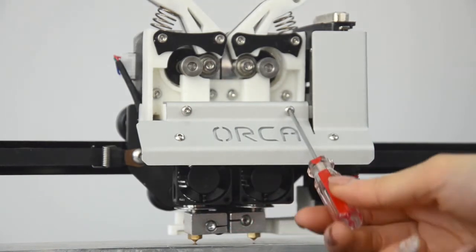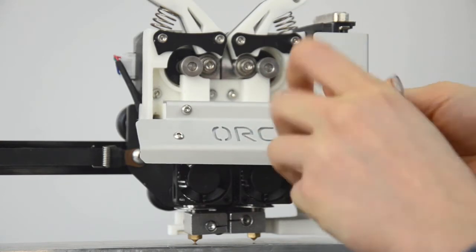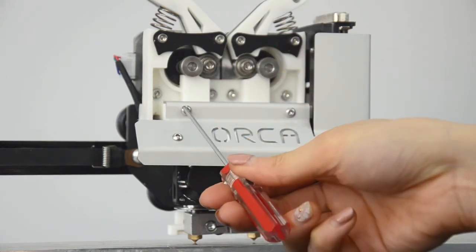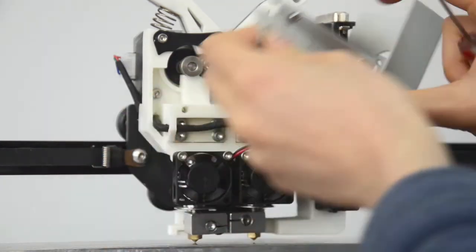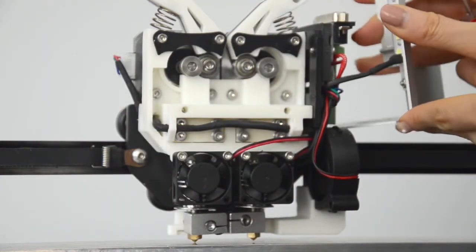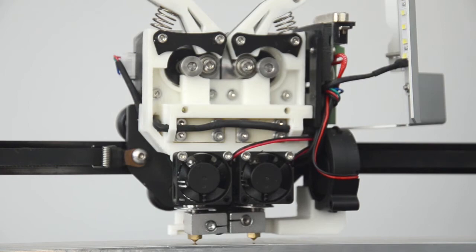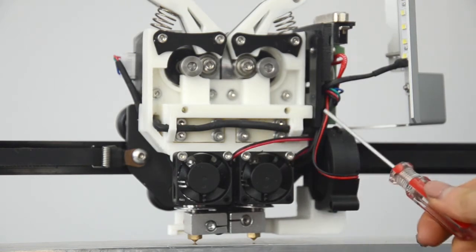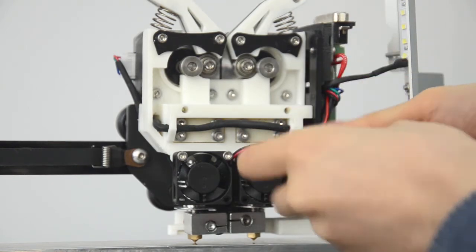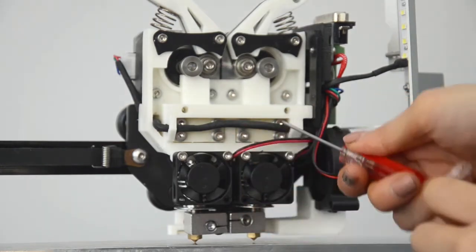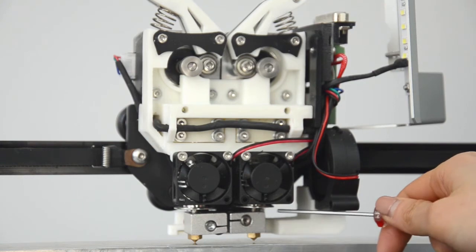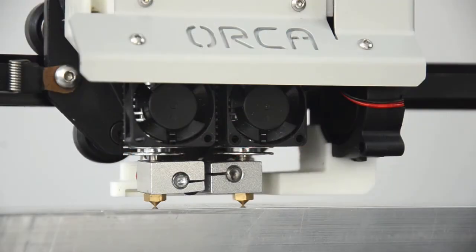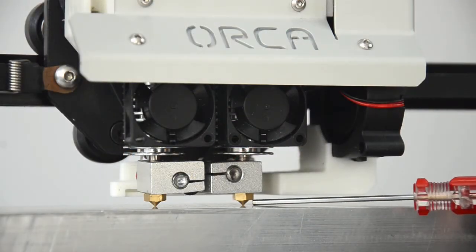Loosen these two screws in the front and put the housing aside. Loosen these four screws that fix the right hot end. Pull down the right hot end a little bit to make the nozzle contact the bar so that they can be level with each other.